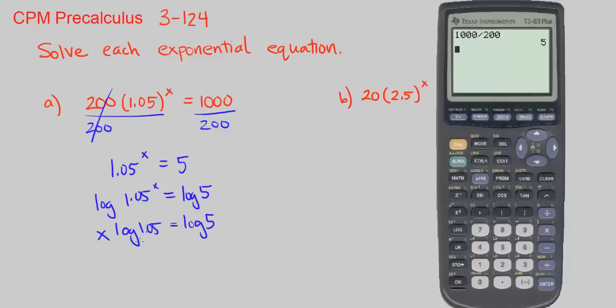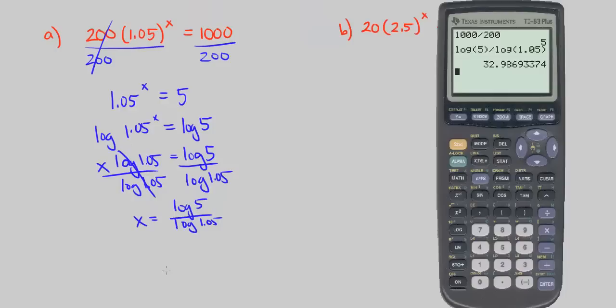We can solve for x by dividing both sides by log of 1.05. These cancel out here. We get x equals log of 5 divided by log of 1.05. Plug that into your calculator.